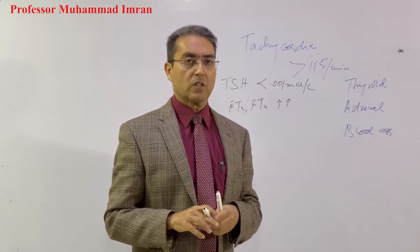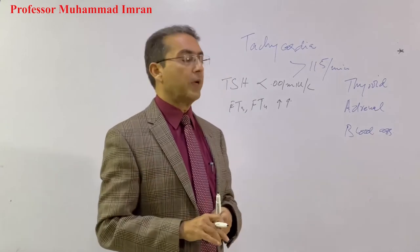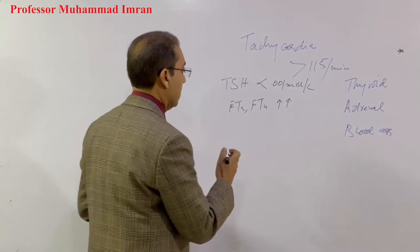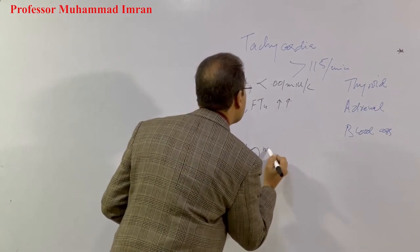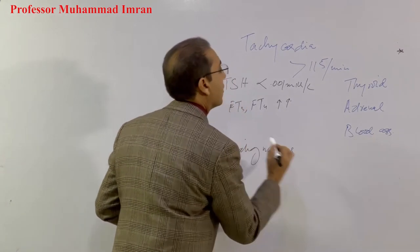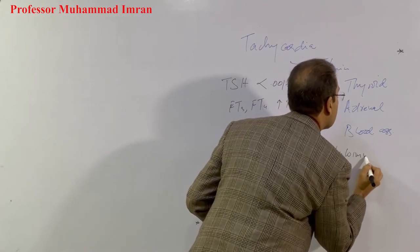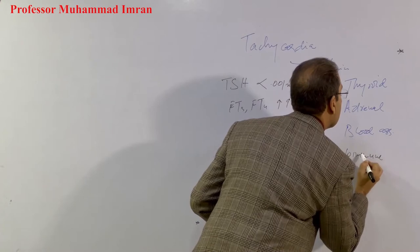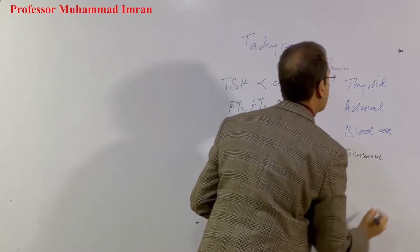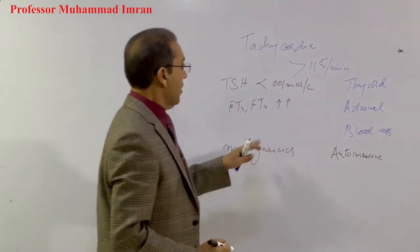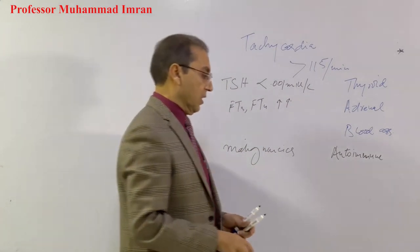Celiac disease is associated with many other disorders, some of them quite serious. They can basically be divided into two main groups: one is malignancies, and the other is autoimmune disorders.